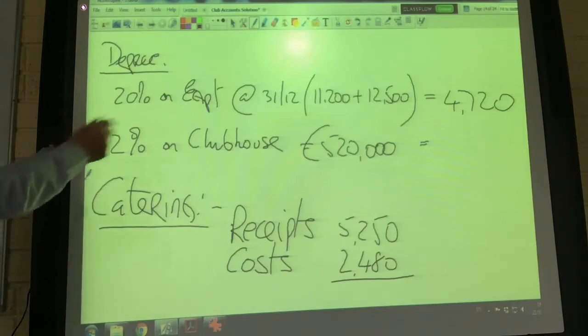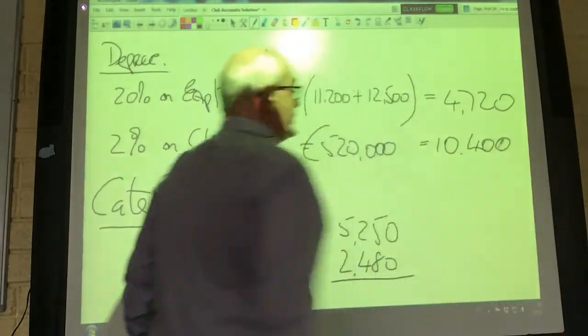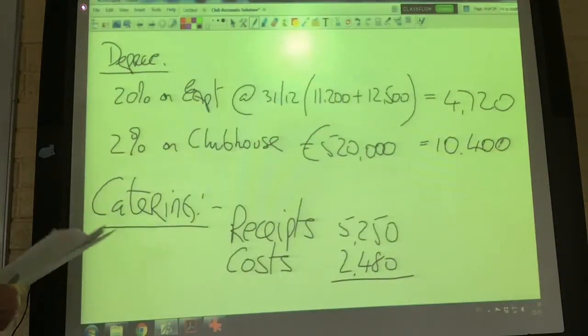Similarly with our buildings, it says 2% of our clubhouse, which is 10,400. We'll charge that to our income and expenditure account as well.